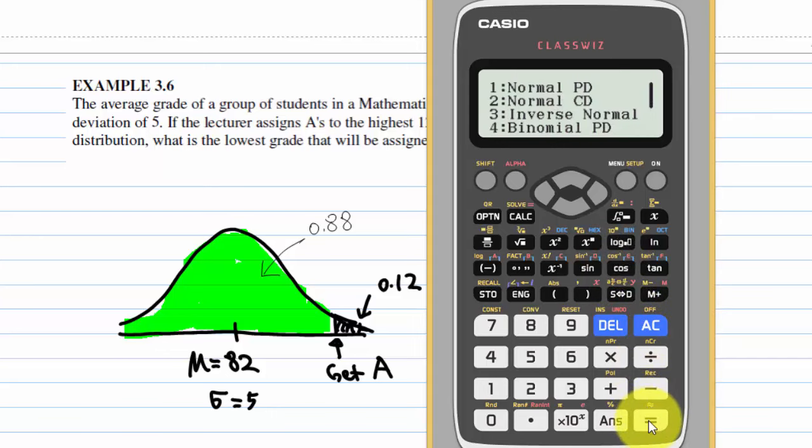And now we are going to select 3 for inverse normal. Then the area we are interested in to the left of A mark is 0.88, which is the green area.